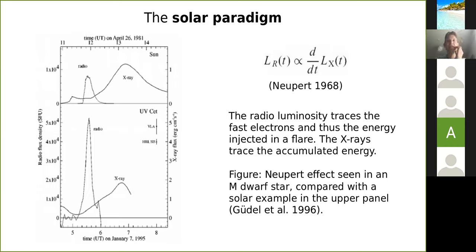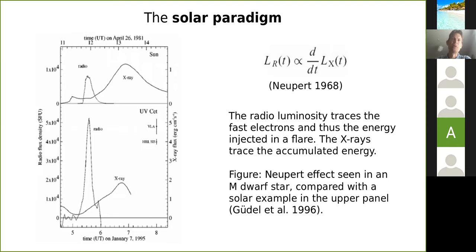On the Sun and on nearby stars, this even goes as far as leading to a correlation in the time domain. You really see the acceleration in the radio first, and then you see the buildup of energy in X-rays later on. On the Sun this is called the Neupert effect, and it has also been observed on nearby active stars — UV Ceti is one example. So there are some expectations as to whether light curves in radio and X-rays may be correlated, and there has been some debate whether this picture we have of the Sun is also relevant for nearby active stars.